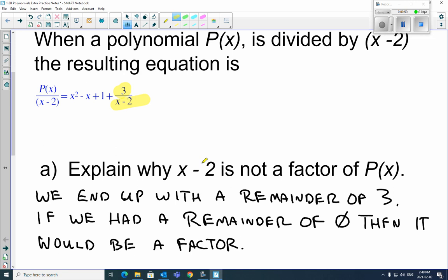Remember, that's the binomial remainder theorem. So because this ends up with a remainder of 3 right here, we know that that is not a factor. Oh, okay, that makes sense. I think that was worth like one mark on the provincial.